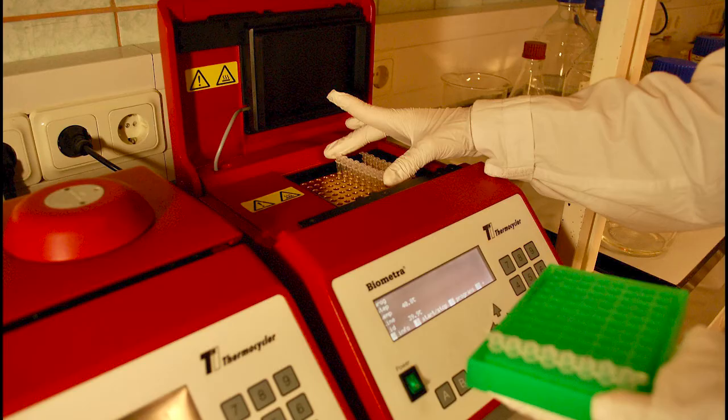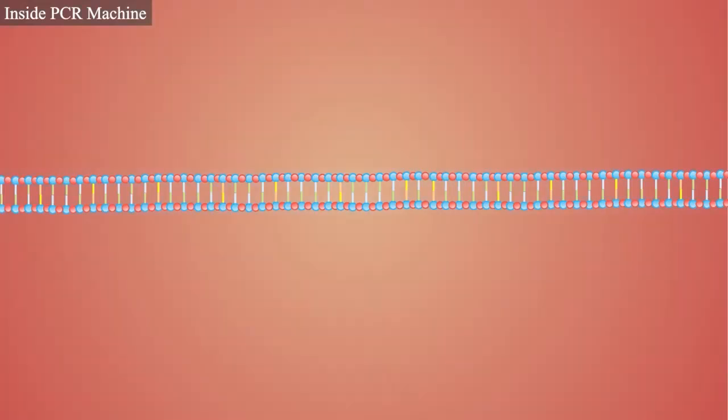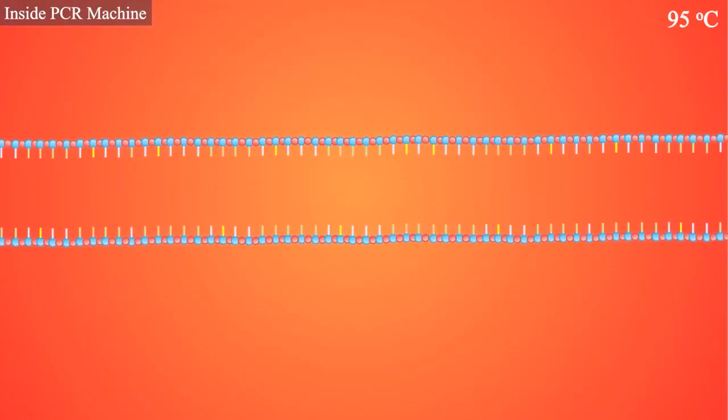Inside the PCR machine, the DNA is heated, breaking the hydrogen bonds that hold its two strands together.